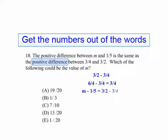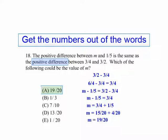So we fit that in our equation where we say m minus 1/5, the distance between m and 1/5, equals 3/4. Adding 1/5 to both sides, we have m equals 3/4 plus 1/5. We want least common denominator, which is 20. So we've got m equals 15/20 plus 4/20. So m equals 19/20.